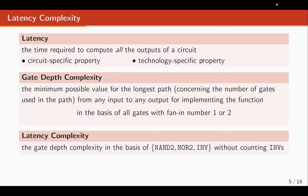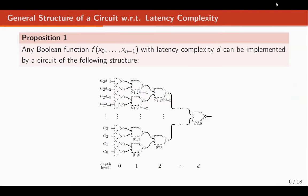We propose a new metric called latency complexity — the gate-depth complexity in the basis of NAND, NOR, and inverter, where inverters are not counted in the gate depth. We showed that any boolean function with latency complexity D can be realized with D levels of NAND or NOR gates and one starting layer of buffers or inverters. There is only one level of inverters or buffers, which is much smaller compared to the latency of all circuits.